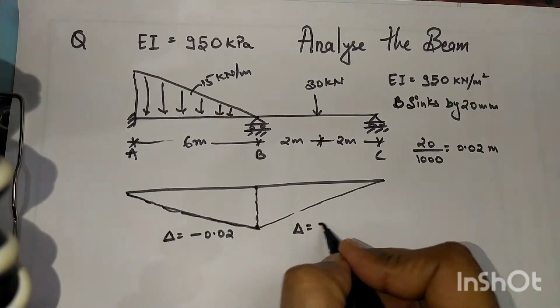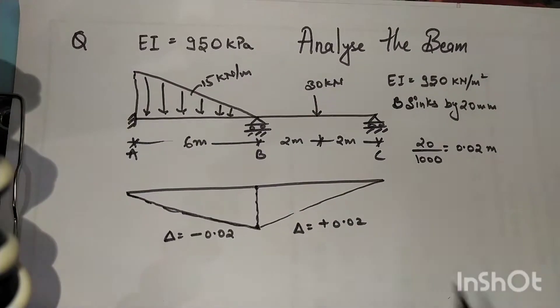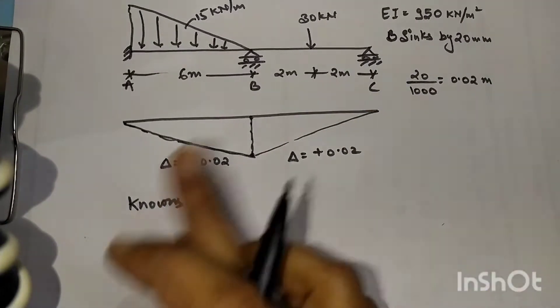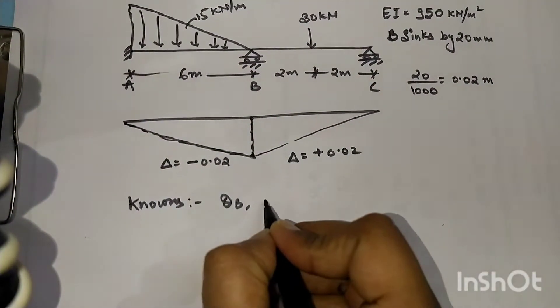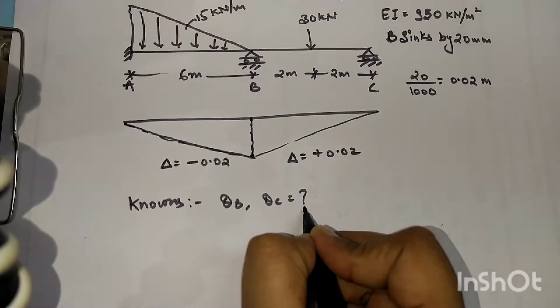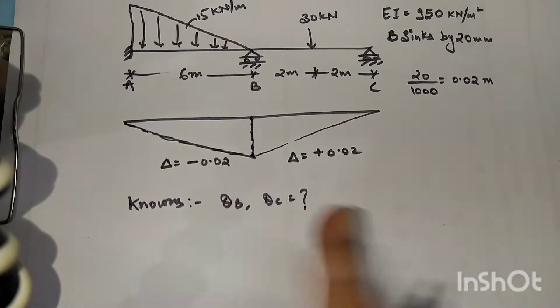We have two unknowns: theta B and theta C. We have to solve. At the supports we have theta B and theta C, both the supports are unknown. For these two unknowns we need two additional equations to solve them.